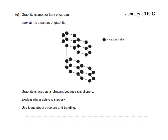Another question: Graphite is another form of carbon. Graphite is used as a lubricant because it's slippery. Explain why graphite is slippery using ideas about structure and bonding. It has weak attractions between the layers, so they can easily slide over each other.